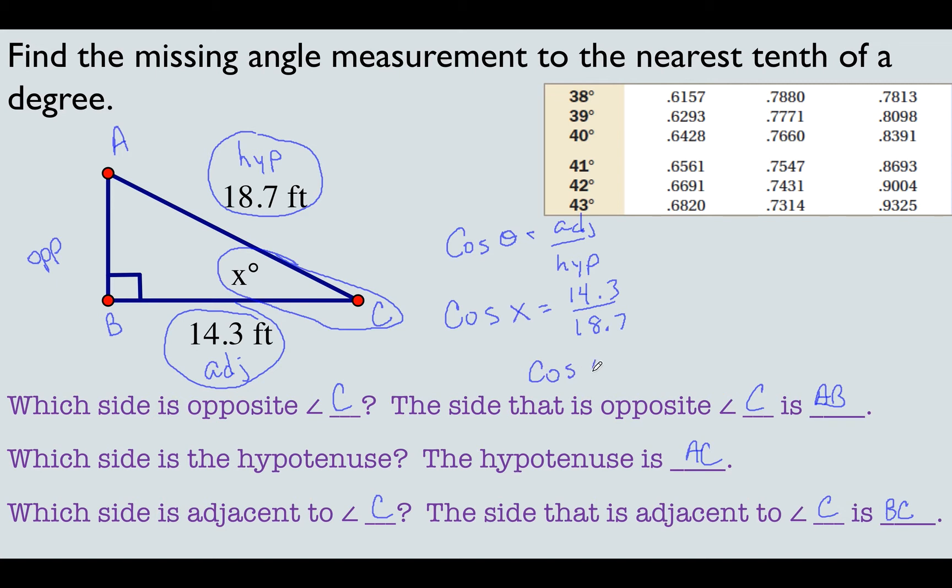So we have to actually do that division now. 14.3 divided by 18.7 is 0.7647. Right now we're doing the opposite of the previous procedure here. I have the decimal. I have to go find out what angle that is. So I come down the cosine column. Remember the cosine column? This is just a little screenshot of a part of the chart. 0.7647. Well, there's 0.7660, 7547. That's somewhere in between here. So it's somewhere between 40 and 41 degrees. But it wants it to the nearest tenth of a degree. So we're going to say that X is about 40 degrees.